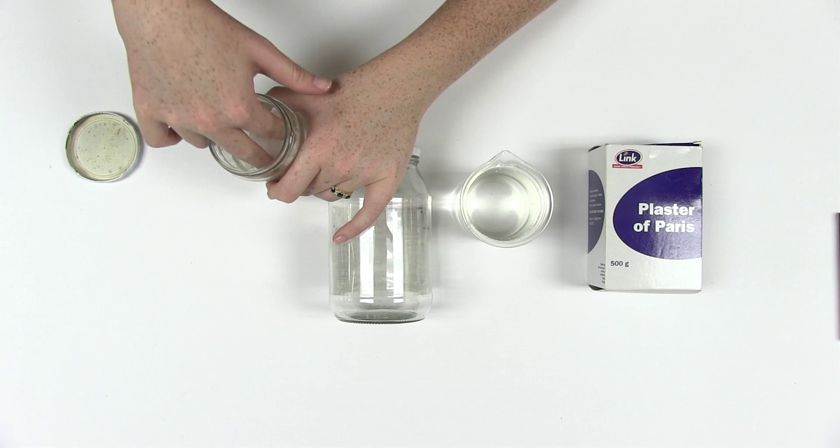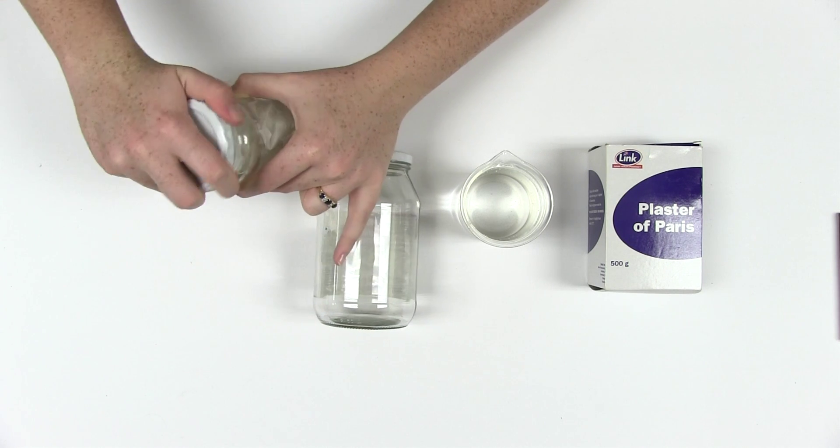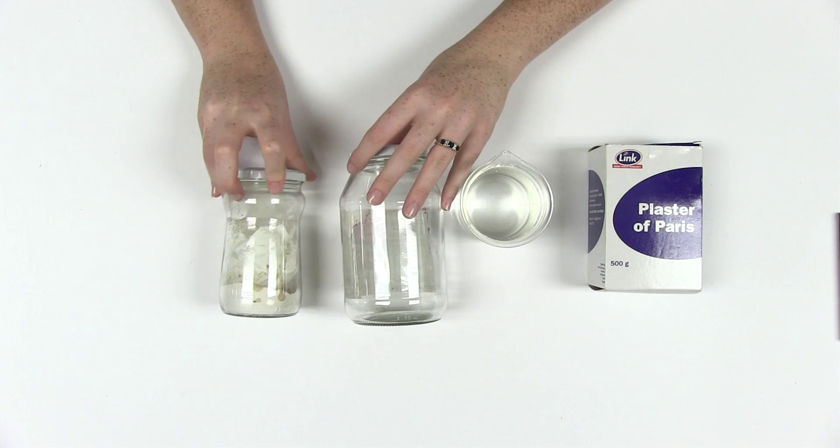Put some ripped paper towels in the jar to keep the insects from damaging themselves against the glass. This jar to the left is how the end product should look.